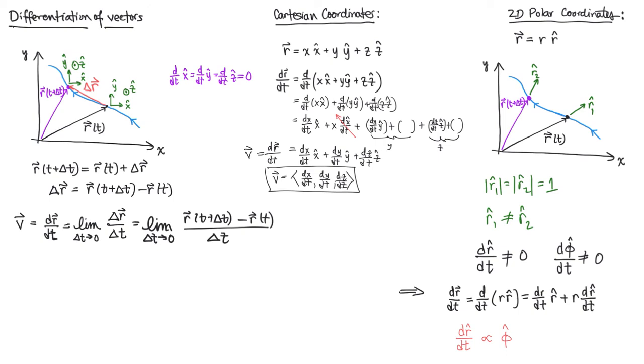So if we come back to our previous diagram, at that location r of t, we have a unit vector r-hat, and we have the second unit vector phi-hat at that instant of time, and those vectors are perpendicular to each other. What we're going to show is that the direction in which r-hat changes is parallel to the phi-hat direction.